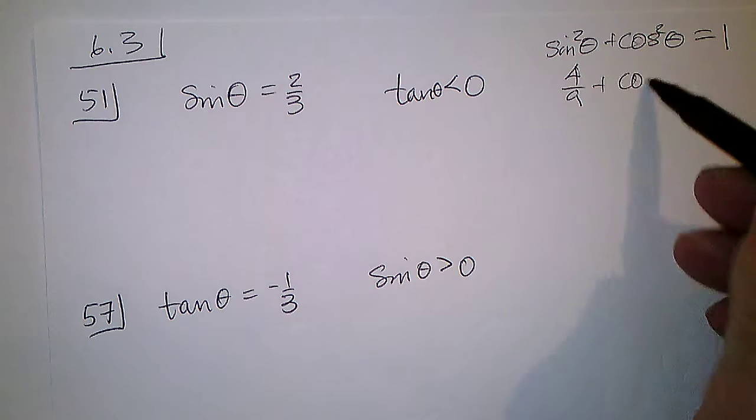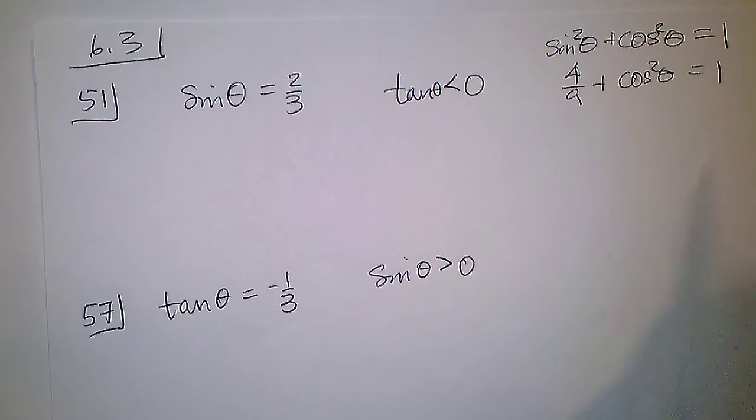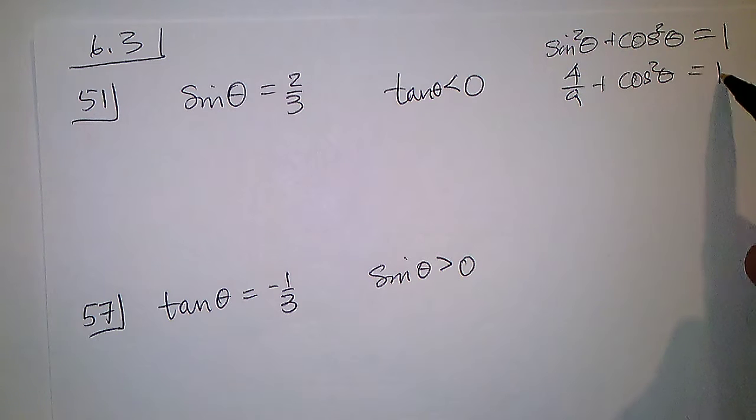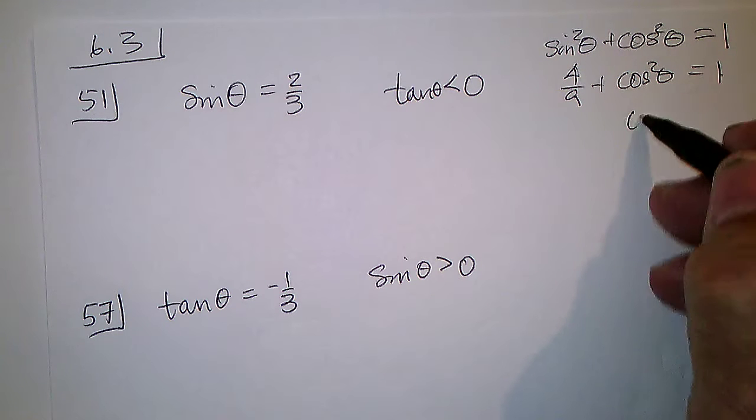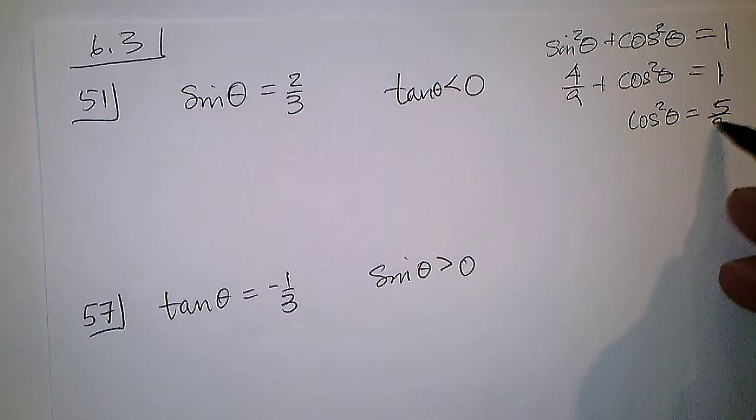So 4/9 from 9/9, the cosine squared theta would have to be 5/9.